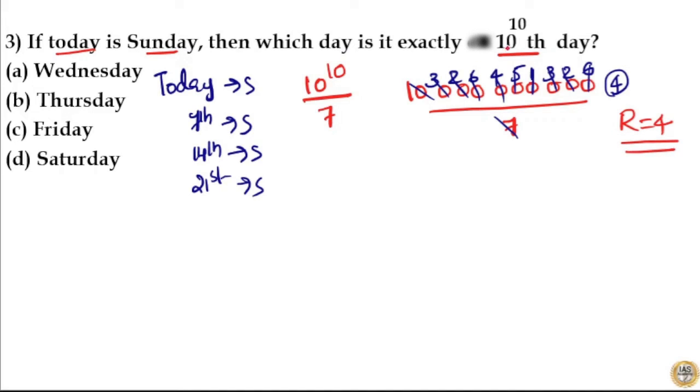Remainder 4 means there are 4 odd days in 10 raised to 10 days. So if today is Sunday, that means in 10 raised to 10 days there are 4 odd days: 1, 2, 3, 4.